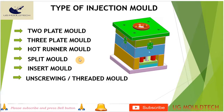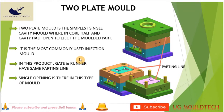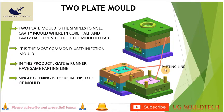Now we move on to the two plate mold. The two plate mold is the simplest single cavity mold where the core half and the cavity half open to eject the molded part. This is for a simple component which has no undercut and no threading. It has only a single parting line, and the product gate and runner have the same parting line. There is only a single opening — no multi-daylight opening. This is for simple products only.